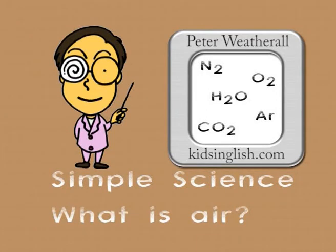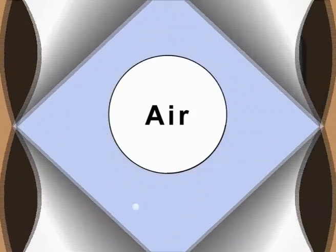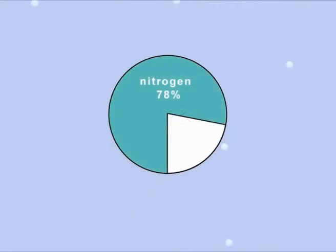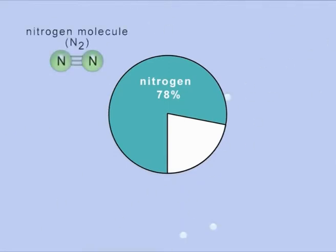Simple Science. What is air? The air around us is a mixture of gases. 78% of the volume of air is made up of just one gas, nitrogen.